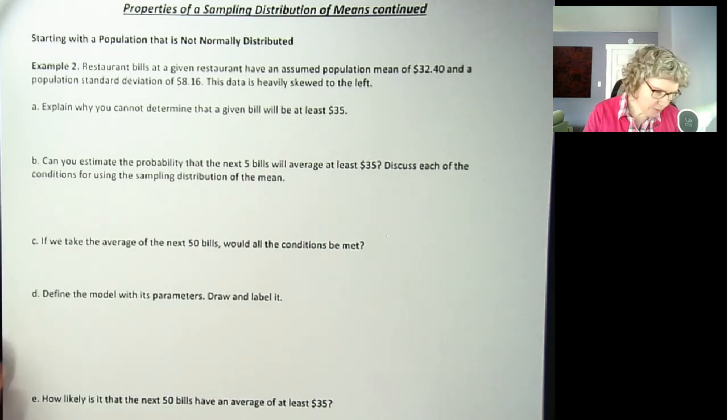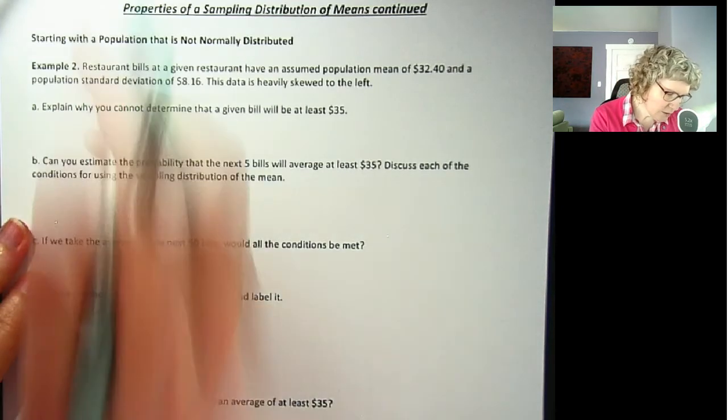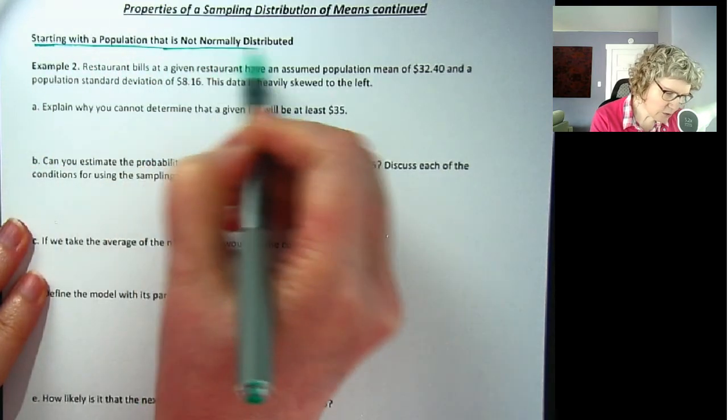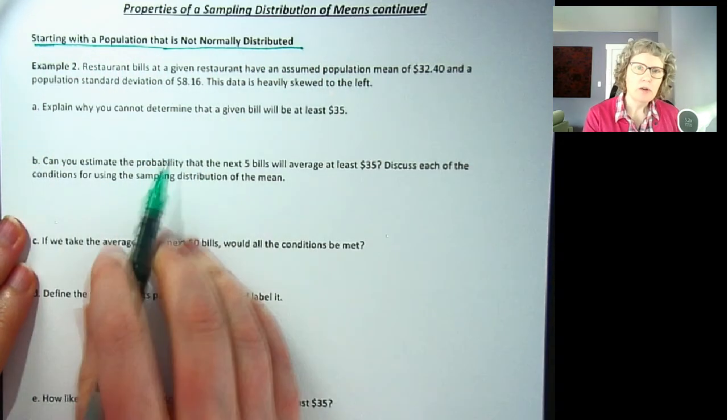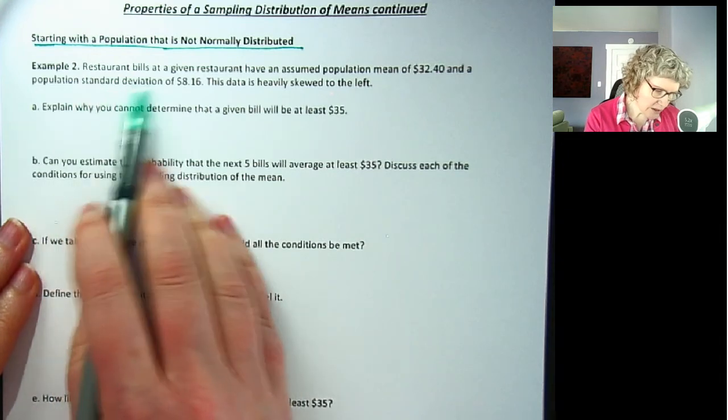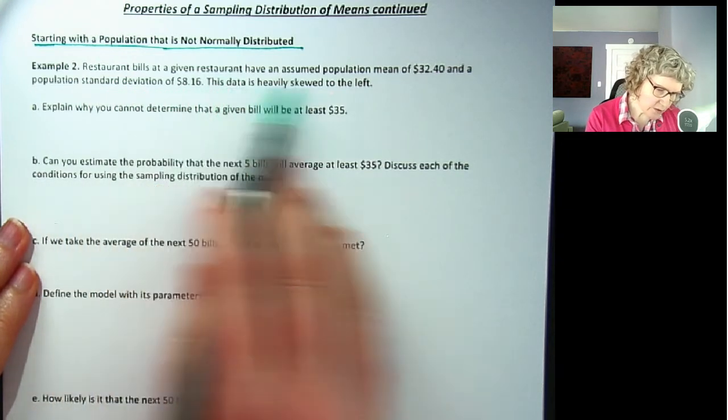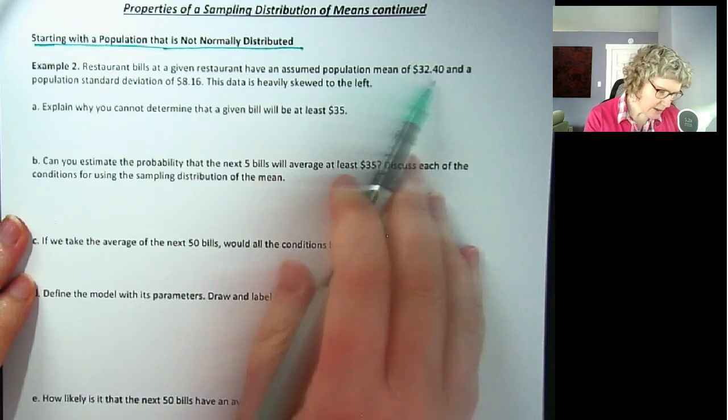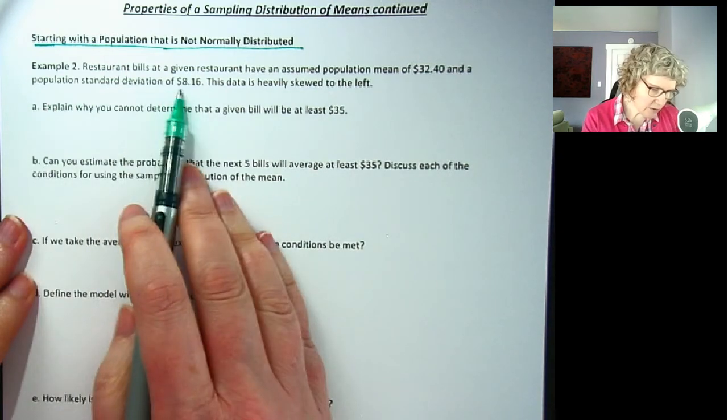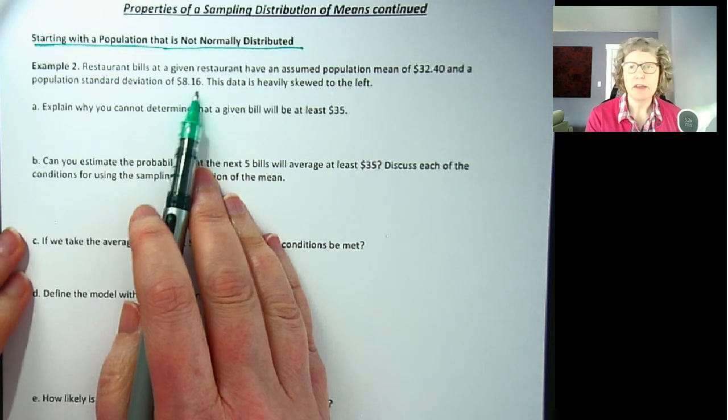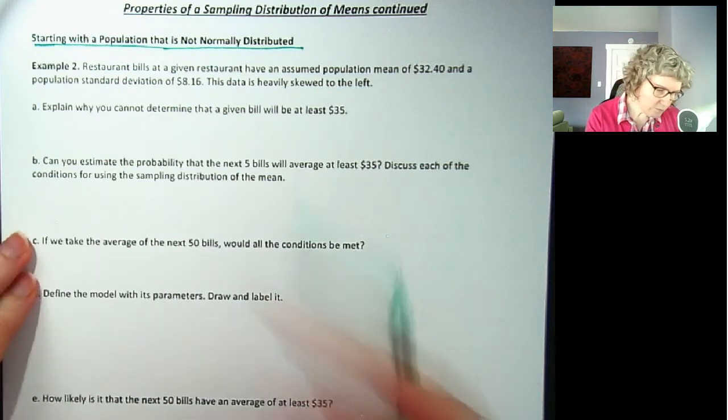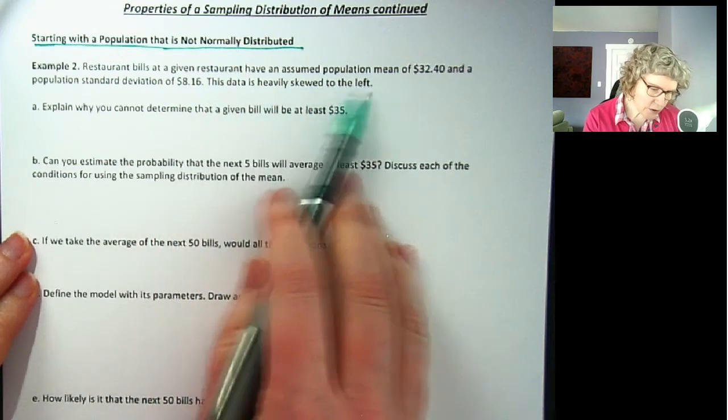Let's look at our example. I just want to highlight that this is starting with a population that is not normally distributed. Restaurant bills at a given restaurant have an assumed population mean of $32.40 and a population standard deviation of $8.16. This might be from some data over time where they feel like this is really representative of the whole population. This data is heavily skewed to the left.